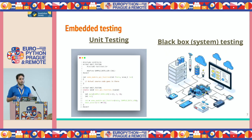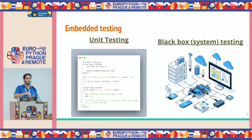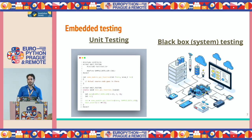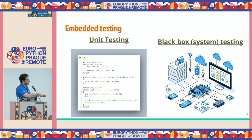Then we have the black box or integration testing, where we have our board and we need to connect it with all the other nodes, devices, and things — because basically an embedded system, by definition, is a system that works inside other systems. It needs to communicate with a server, gather some data, and publish it to a topic in MQTT, which is a communication protocol. This second testing is the most useful one where you test your whole setup with your whole board. This is the one we're going to try to automate with Robot Framework.